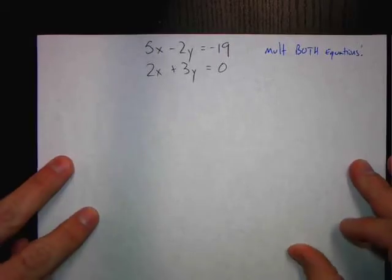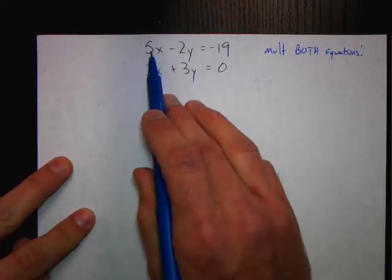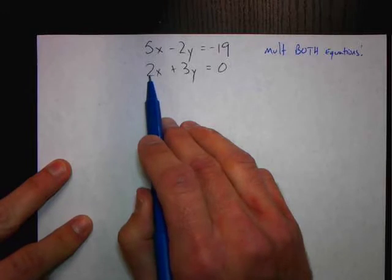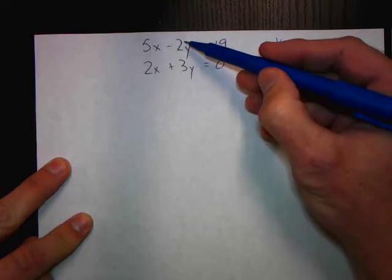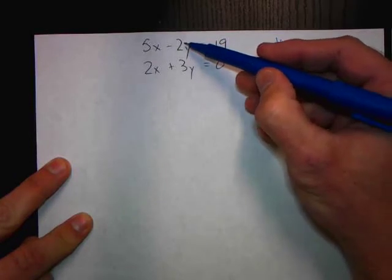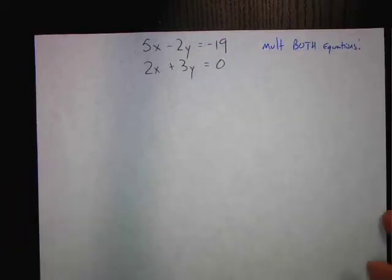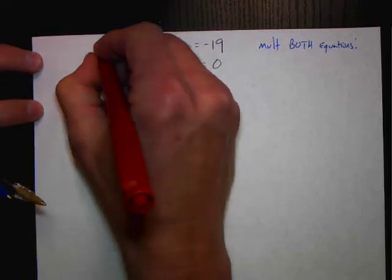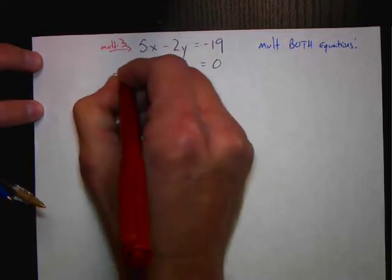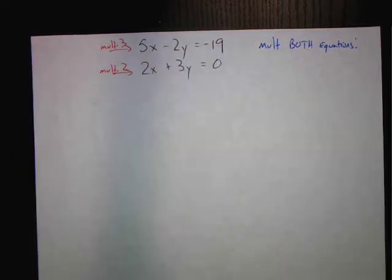It's almost like finding a common denominator. If you look at the x's, what would happen if we multiplied the top equation by 2 and the bottom equation by 5? We'd have 10x and 10x — cancel. What if we multiplied the top equation by 3 and the bottom equation by 2? We'd have minus 6y and plus 6y — cancel. Personally, I'm going to cancel the y's, so I'm going to multiply the top equation by 3 and the bottom equation by 2 to make two new equations and cancel a variable.